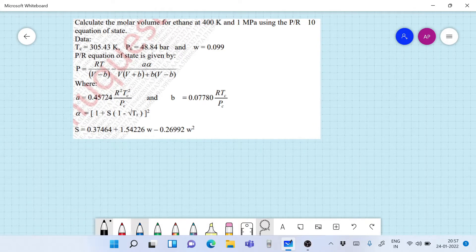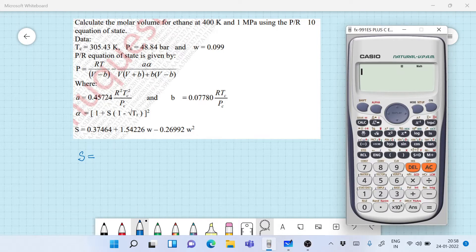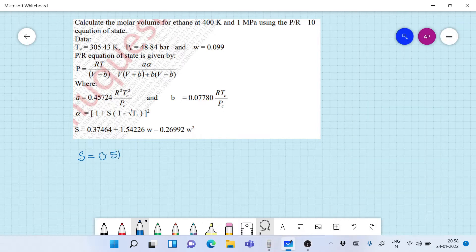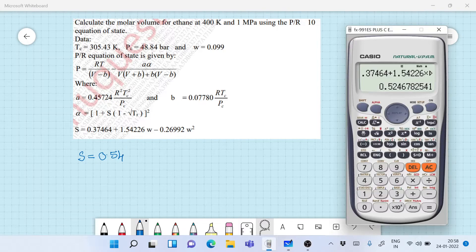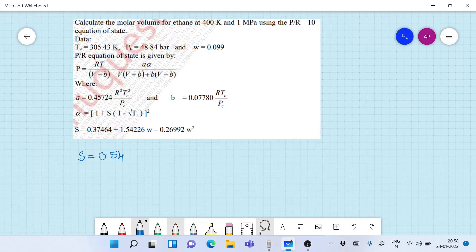The first thing that we need to do is we need to calculate the value of s. We have omega as 0.099. So let's calculate the value of s: 0.37464 plus 1.54226 into omega that's 0.099 minus 0.26992 omega square. So that's 0.099 the whole square. And we have the value of s. The value of s is 0.5246.